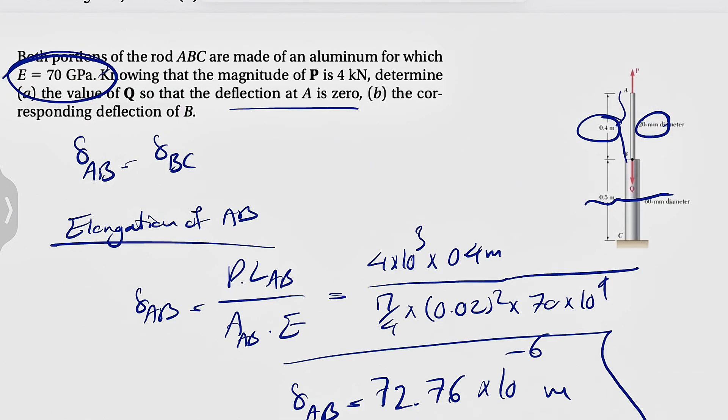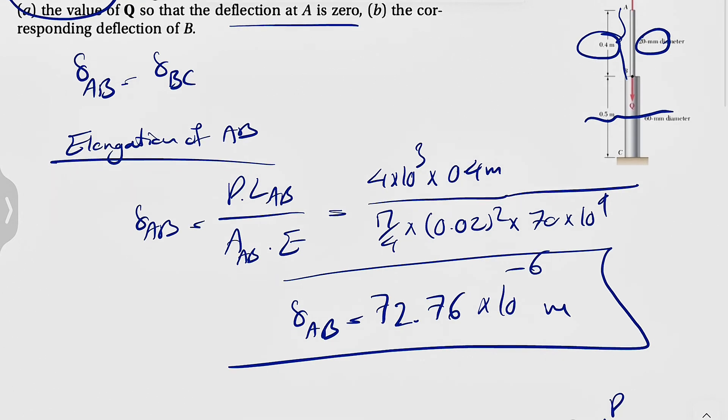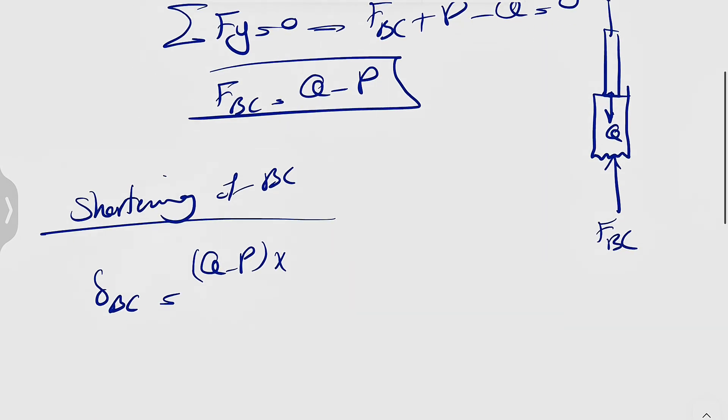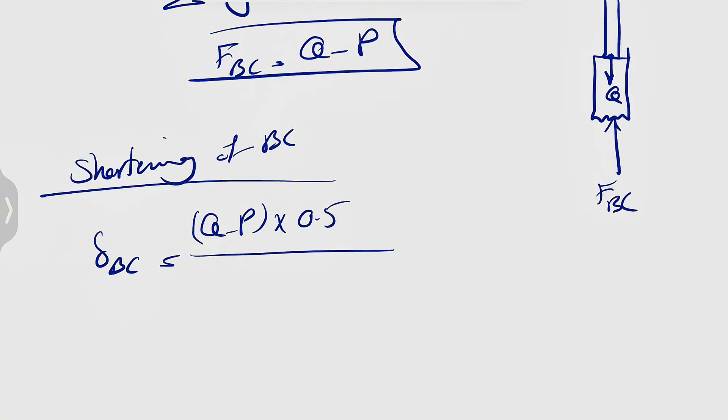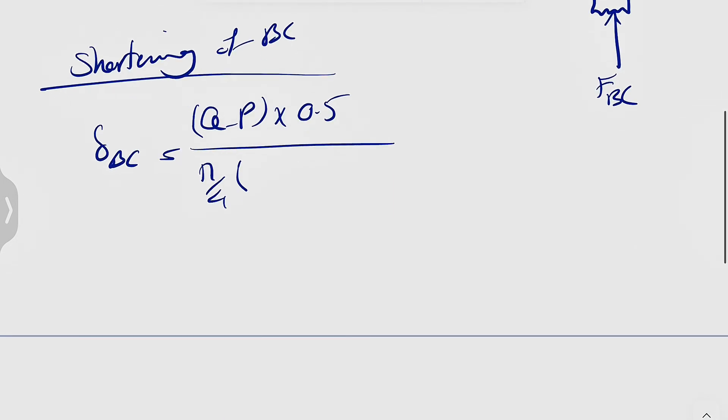since AB is in tension, it will be elongated, the other one has to be shortened. So this time we're going to go based on the shortening of BC. This one will equal the force Q minus P times the length of BC. The length is 0.5 meters, times 0.5 divided by the area pi over 4. This time the diameter is 60 millimeters, so 0.06 squared. That gives us the area, and we have the same elastic modulus, 70 gigapascals, 70 times 10 to the 9.